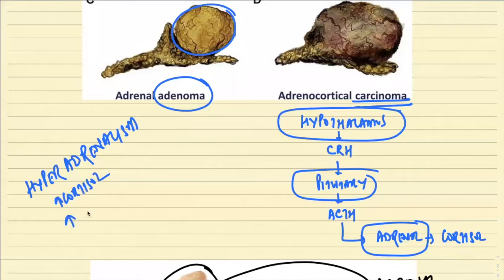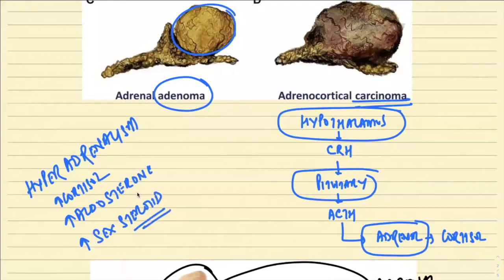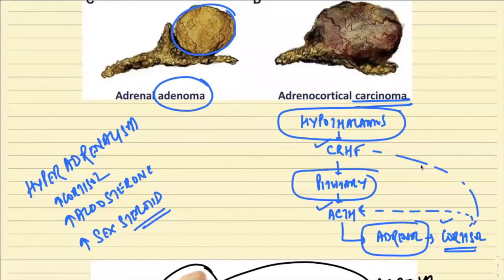We will also read about conditions of increased secretion of aldosterone — mineralocorticoids — and conditions of increased release of sex steroids, called adrenogenital syndrome. The first signal is from the hypothalamus: CRH acts on the pituitary to release ACTH, which acts on the adrenal to release cortisol. Once cortisol enters circulation, it gives feedback inhibition, suppressing the release of CRH as well as ACTH. With this concept in mind, we are going to start with hyperadrenalism.